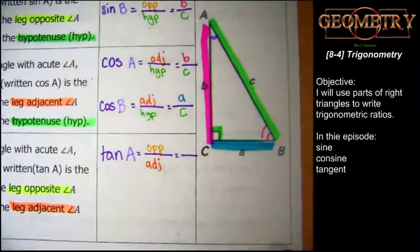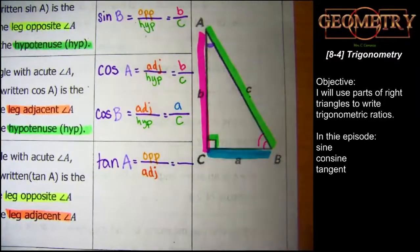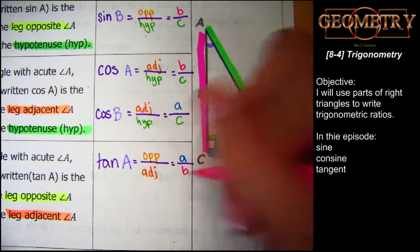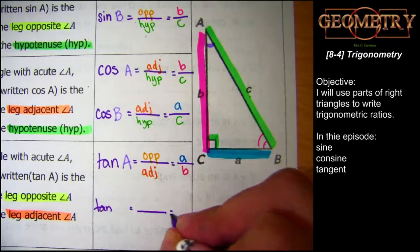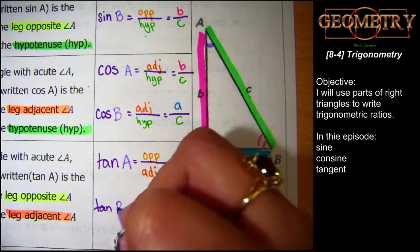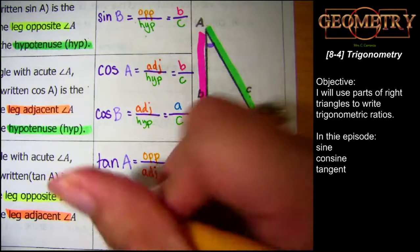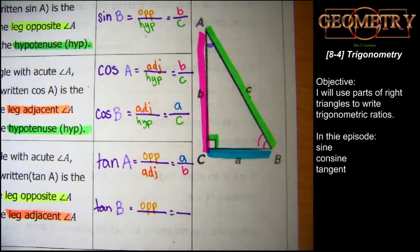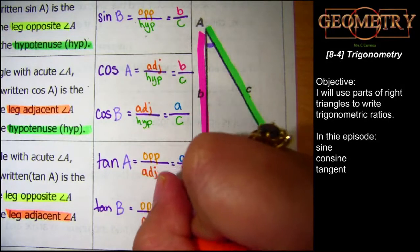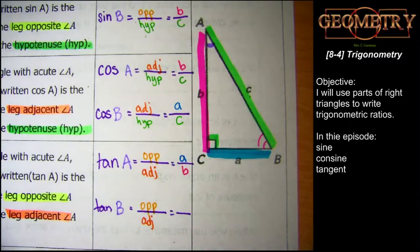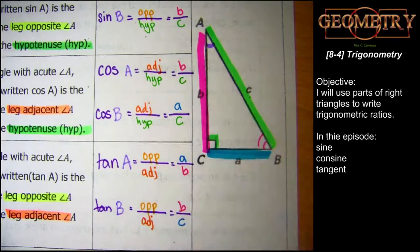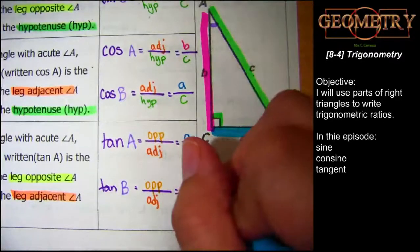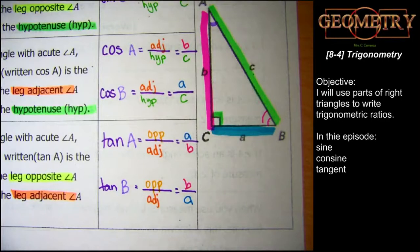Tangent is always the side opposite the angle divided by the side adjacent to the angle. The side opposite angle A is a, and the side adjacent to angle A is b. From angle B's point of view, tangent of B is b over a. Do you notice the pattern between those two tangents? They're flipped — they're reciprocals of each other. File that away for later.